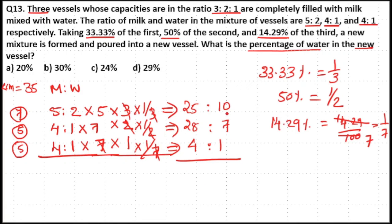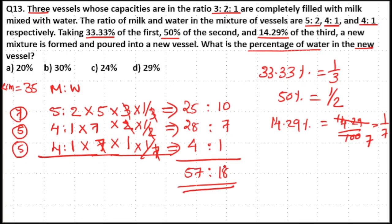Adding together: water totals 10+7+1 = 18, and milk totals 25+28+4 = 57. So the new milk-to-water ratio is 57:18.